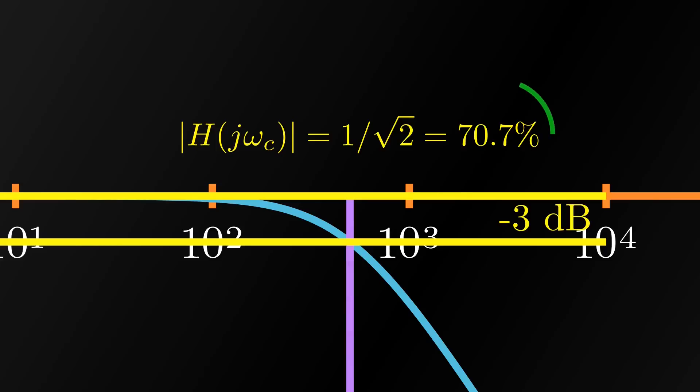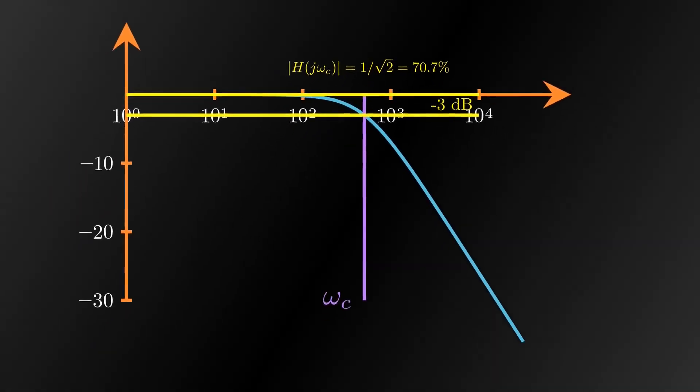The gain in linear scale is equal to 1 over the square root of 2. In terms of percentage, it translates to 70.7% of the passband gain. In decibel scale, it is equivalent to minus 3 decibels.